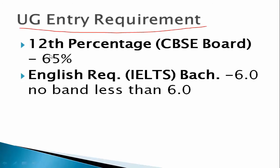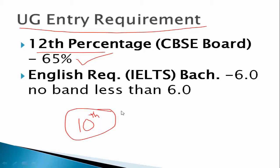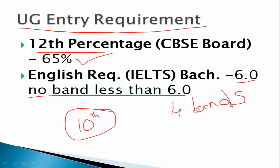For undergraduate requirements, the minimum 12th grade requirement for CBSE board is 65%, and for state board it remains the same — 65%. The 10th grade score can be anything. For English, the IELTS requirement is 6.0 overall, with no band less than 6.0 across all four bands: speaking, listening, writing, and reading.